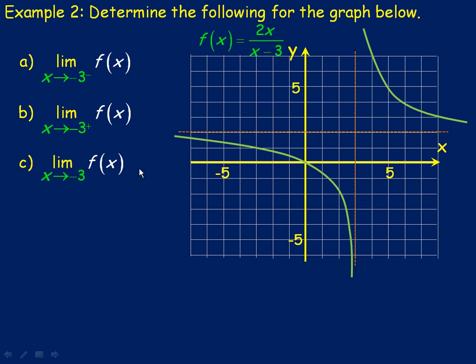Okay, one last example on the fourth page here is to determine the following for this graph. And here it says the limit as x tends towards negative 3, and this means, again, the left-hand limit.